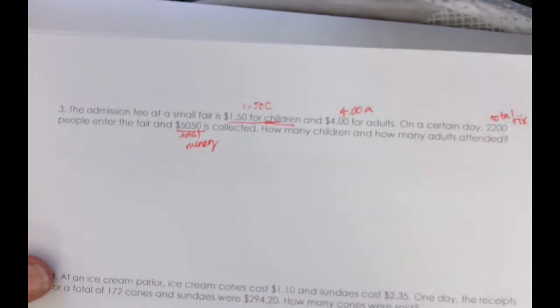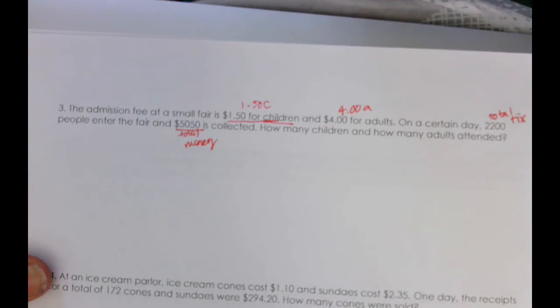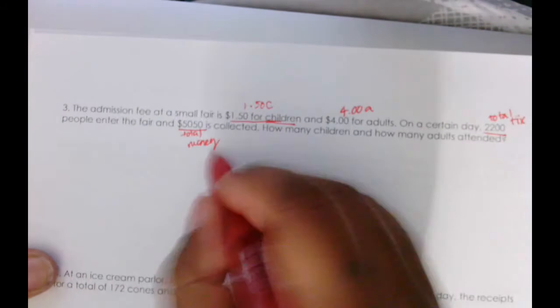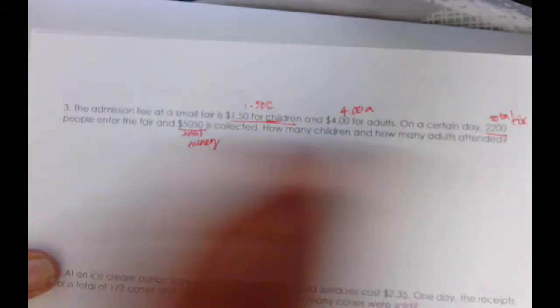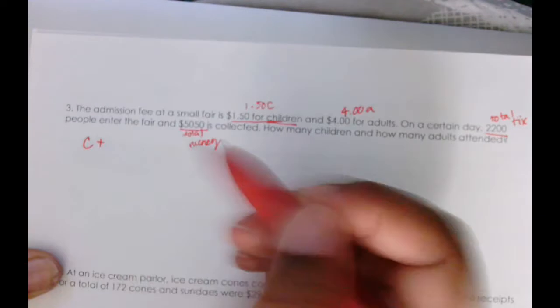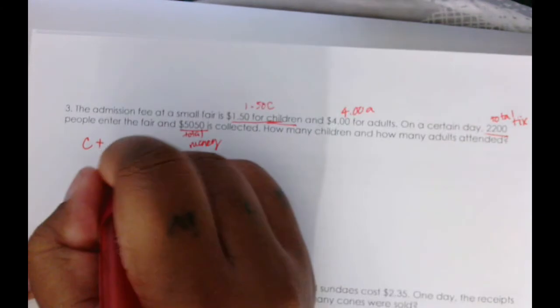So I need to figure out an equation. The first thing I know is however many tickets they sold for the children and however many tickets they sold for the adults, together that's going to add up to 2,200. So however many tickets they sold for the children, I'm going to call that c, plus however many tickets they sold for adults, we want to call that a, is going to equal 2,200.